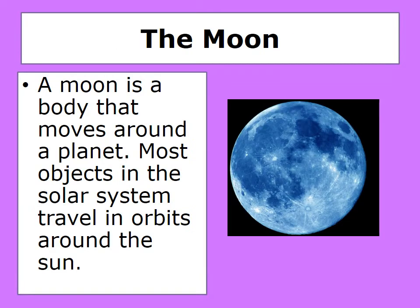The moon. A moon is a body that moves around a planet. Most objects in the solar system travel in orbits around the sun.